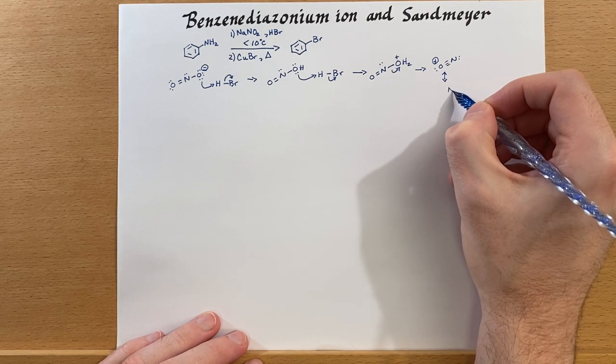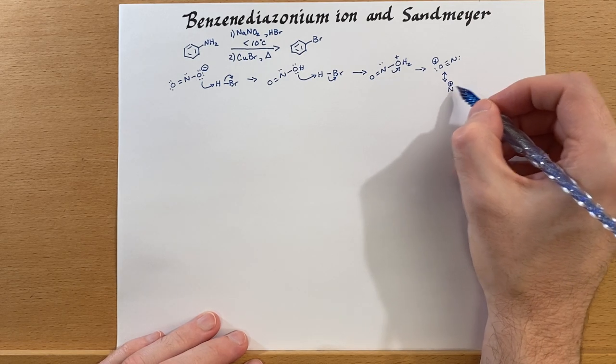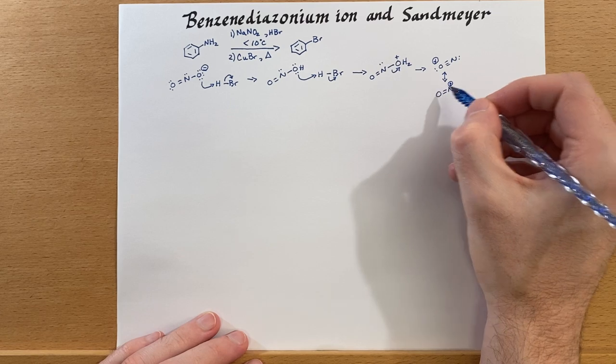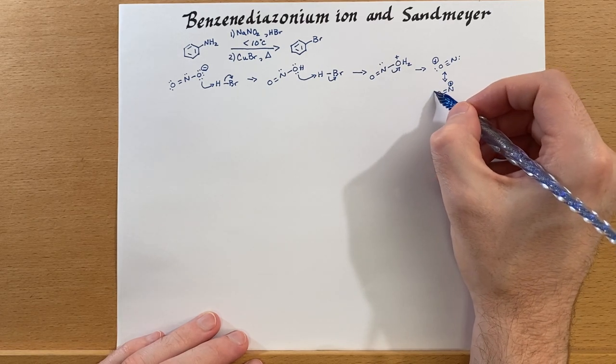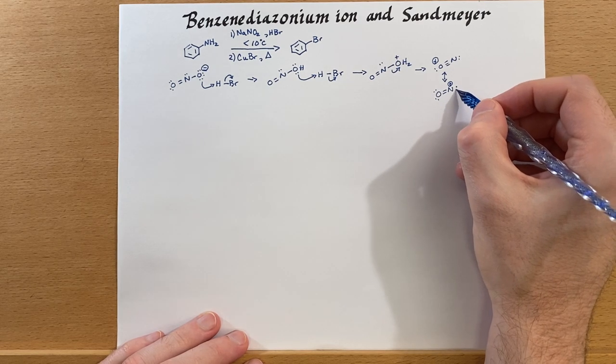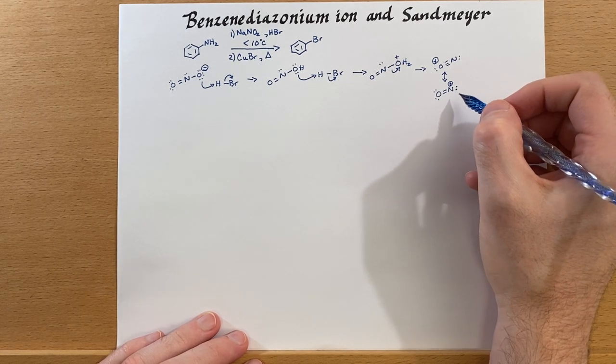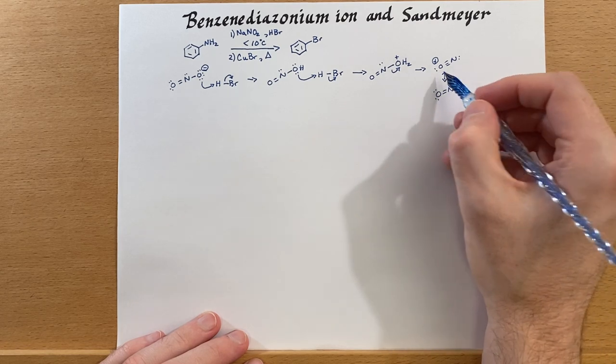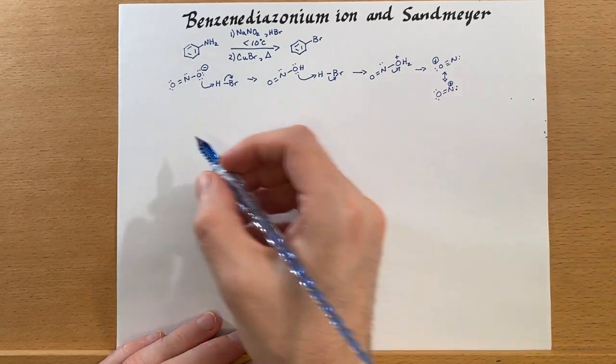which is where we have a plus charge on the nitrogen, which is probably the more dominant form, because now we've put the formal charge on the less electronegative ion. But in any case, this will exist in the solution.